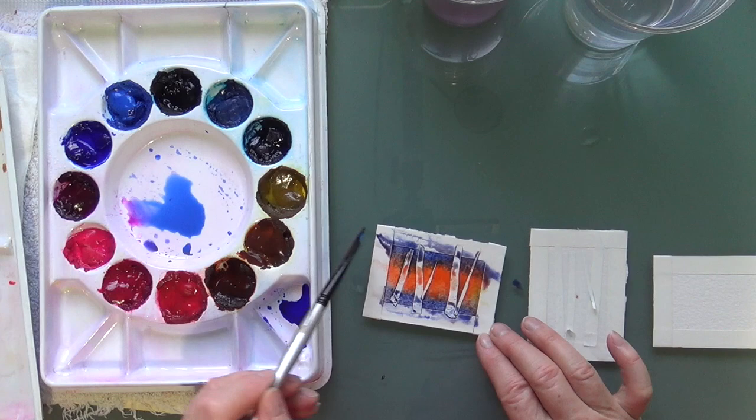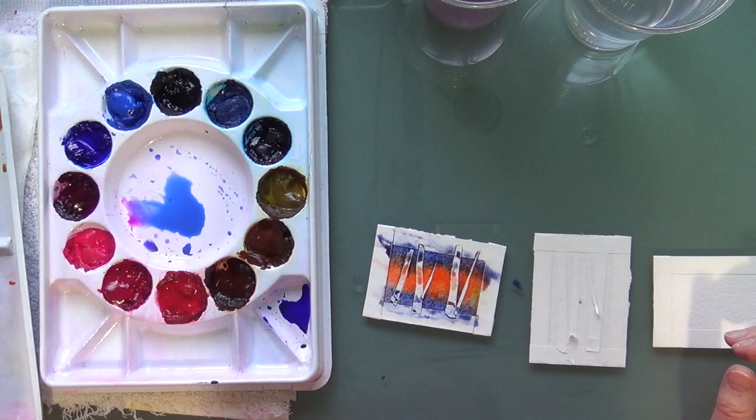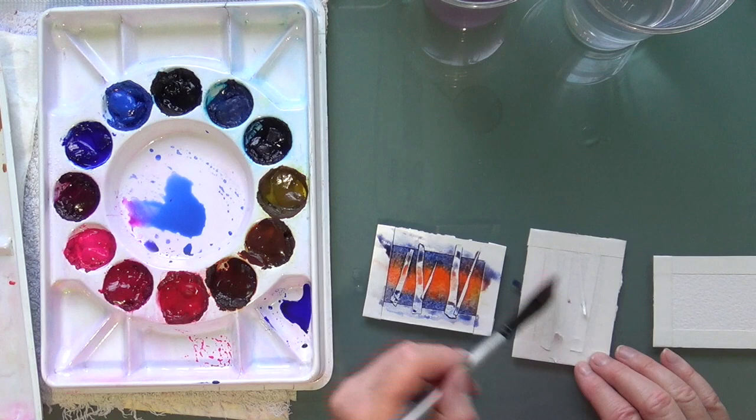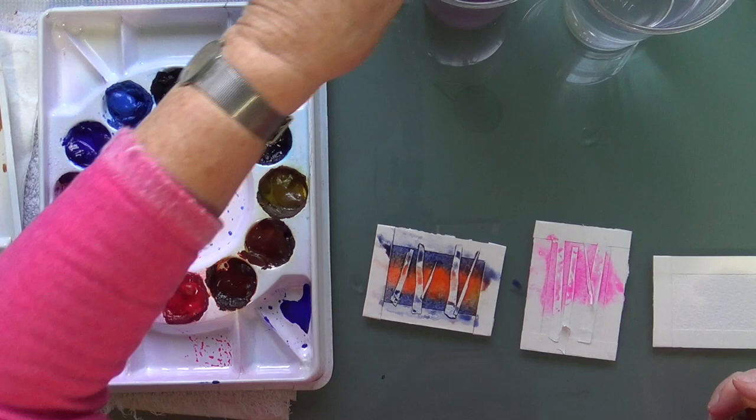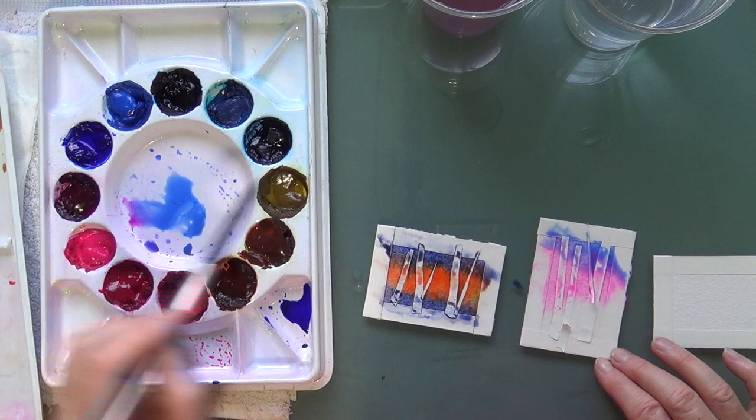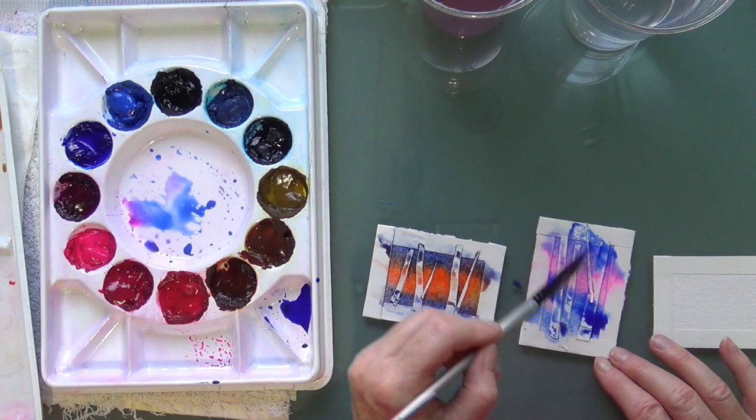And on this other one I want to go with more wintry colors. So I'm going to grab some opera rose and then I'm going to grab some cobalt and also some French ultramarine blue.